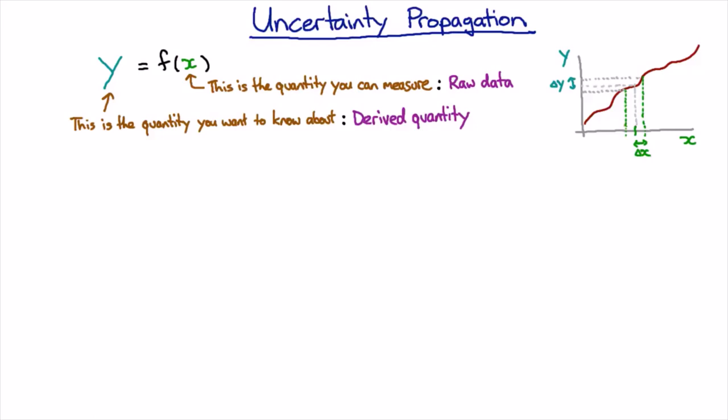If we're doing this really carefully, we'd worry about the particular distribution of possibilities we'd have for our raw data and we'd be able to convert that into a particular distribution for our possible results for our derived quantity. But we can get a good estimate by calculating this distance here.